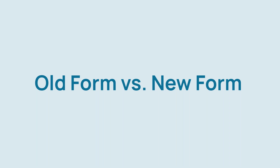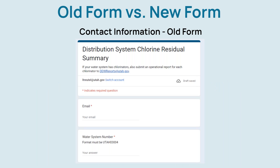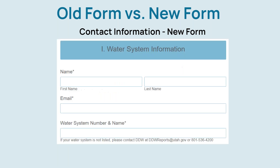Let's move on and explain the changes to the online form by comparing and contrasting the old form and the new form. The new form begins by asking for a name, email, and the water system information. Individuals completing this form will start typing the system's number or the system's name under the water system number and name box, and then select the water system from the options that appear.